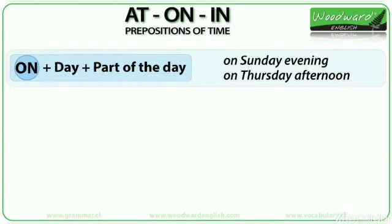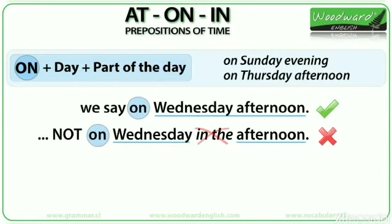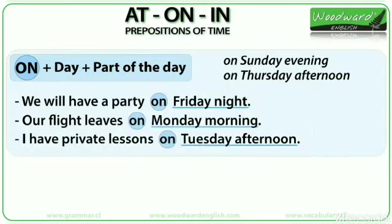When we include a day with a part of the day, we use the preposition on — on Sunday evening, on Thursday afternoon. We do not put anything between the day of the week and the part of the day. We say on Wednesday afternoon — not Wednesday in the afternoon. Examples: We will have a party on Friday night. Our flight leaves on Monday morning. I have private lessons on Tuesday afternoon.